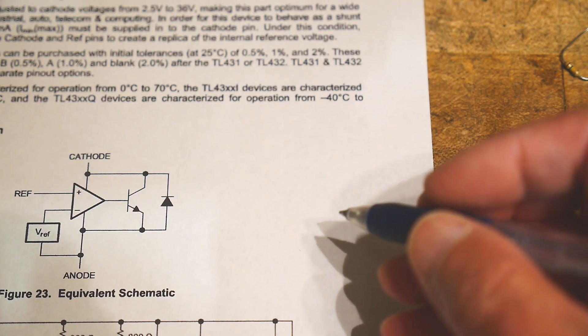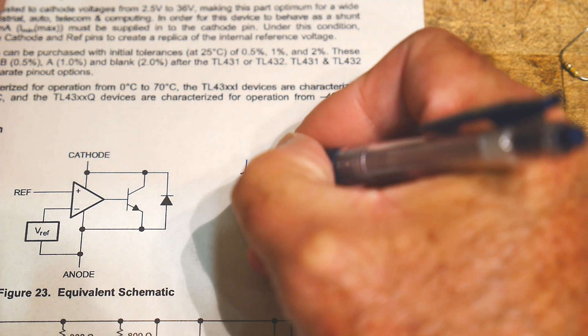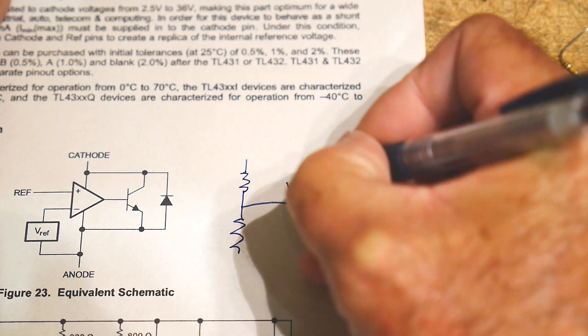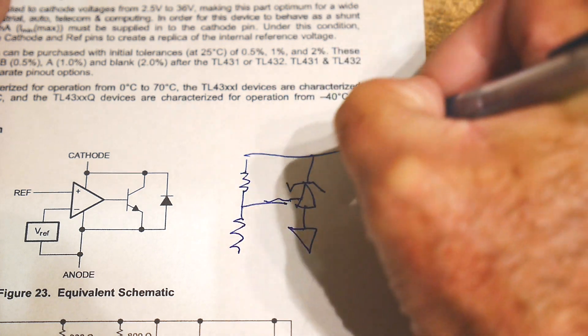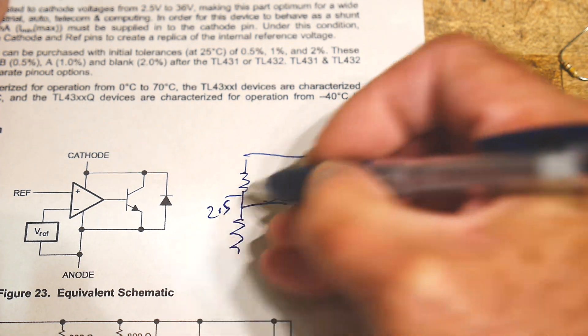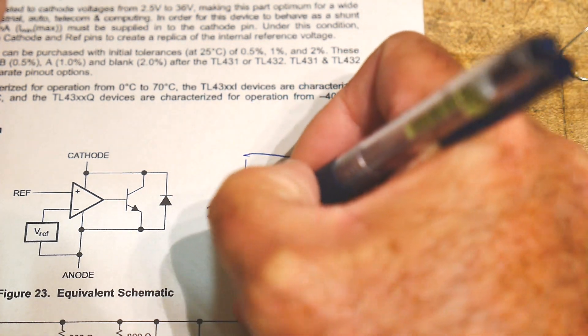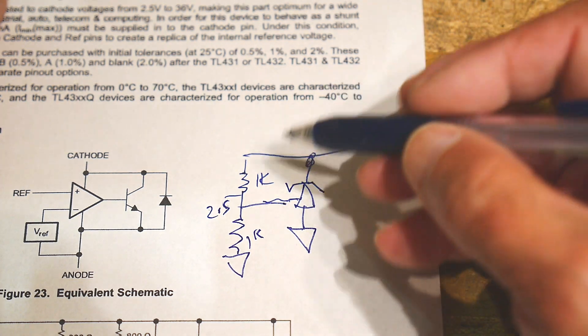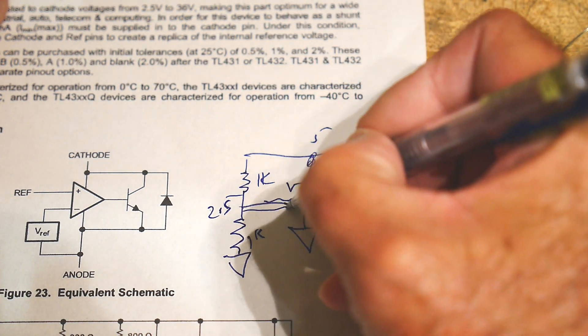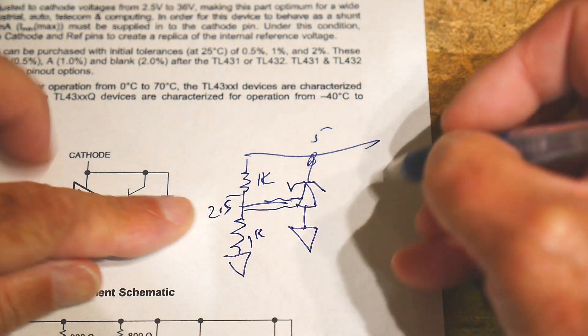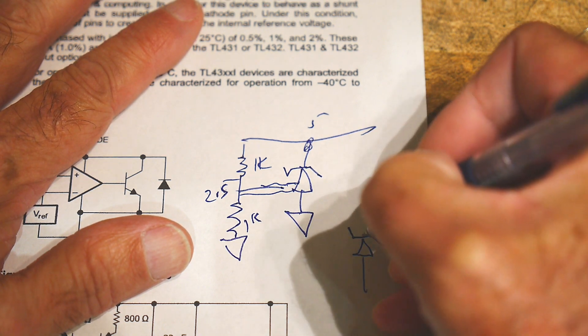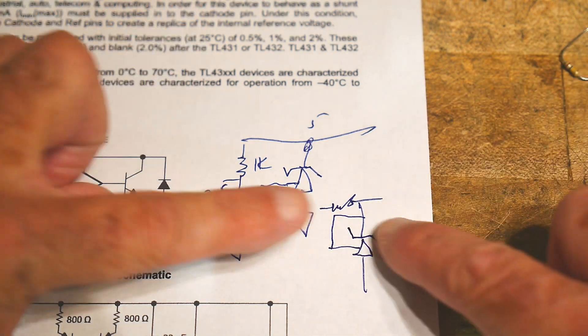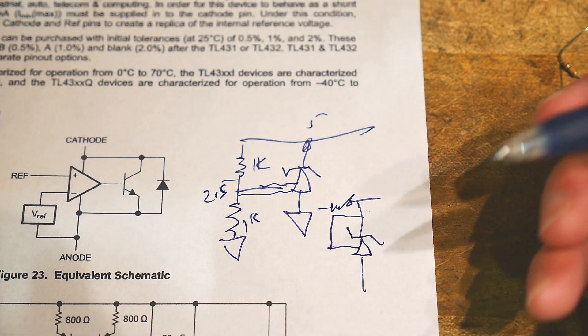If you want to have a higher voltage, you can hook it up so that this is the ref. It wants this to be 2.5V and so it makes this 5V. Like this is a 1K and a 1K. It'll make this 5V because it's looking for 2.5V. It's kind of like the op-amp circuit of a non-inverting op-amp circuit. I hope that makes sense.